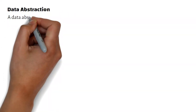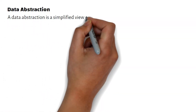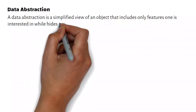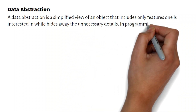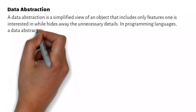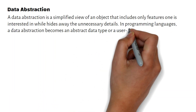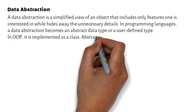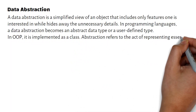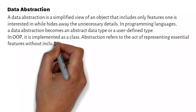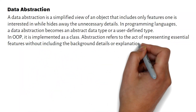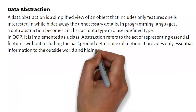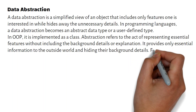Data Abstraction. A data abstraction is a simplified view of an object that includes only features one is interested in, while hiding away the unnecessary details. In programming languages, a data abstraction becomes an abstract data type or a user-defined type. In OOP, it is implemented as a class. Abstraction refers to the act of representing essential features without including the background details or explanation. It provides only essential information to the outside world and hides their background details.